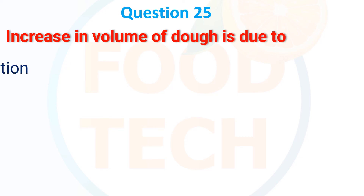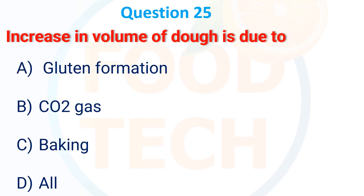Next MCQ: The increase in volume of dough is due to what? Options: (A) Gluten formation, (B) CO2 gas, (C) Baking, (D) All. The correct answer is B — CO2 gas formation.